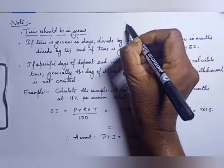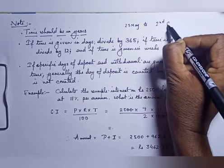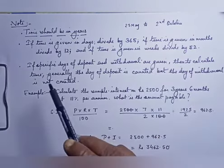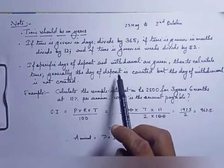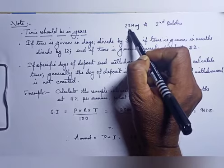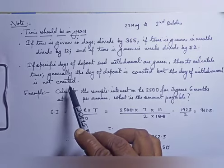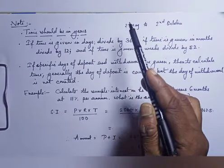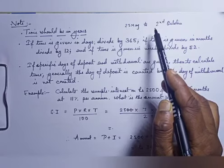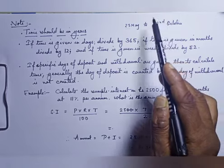Second, if specific days of deposit and withdrawal are given — like 25th May and 2nd October — to calculate the time, generally the day of deposit is counted. The day on which we are taking a loan or depositing the money is counted, but the day on which the amount is being withdrawn or returned is not counted.